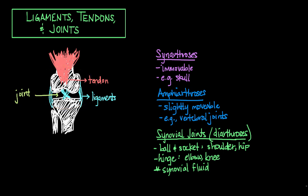The surfaces of bones that meet up in a joint are lined by a special kind of smooth cartilage called articular cartilage, which is composed of specifically hyaline cartilage. Articular cartilage, like all cartilage, is avascular, meaning it lacks any sort of vasculature or blood vessels. So it has a hard time getting the nutrients it needs to heal and recover if it were to become damaged by overuse or infection.